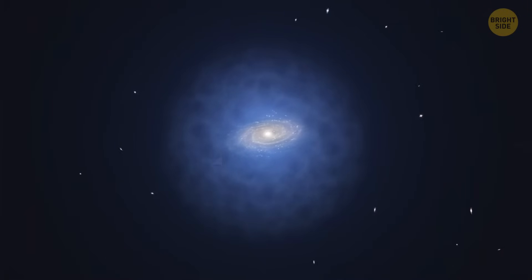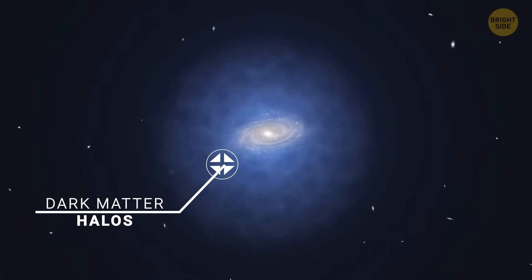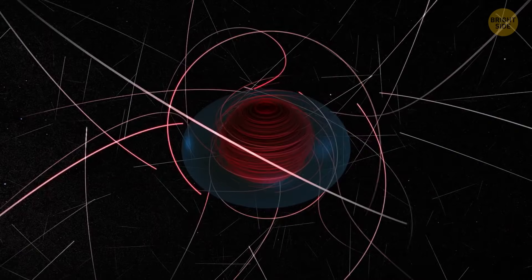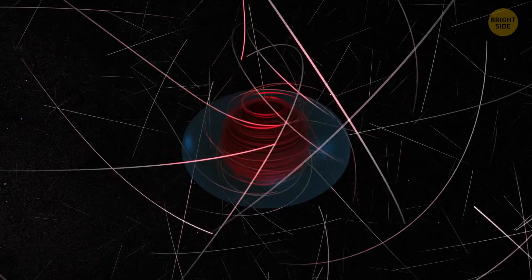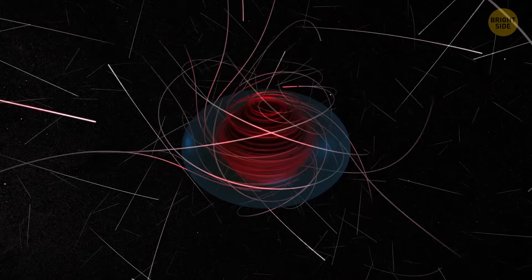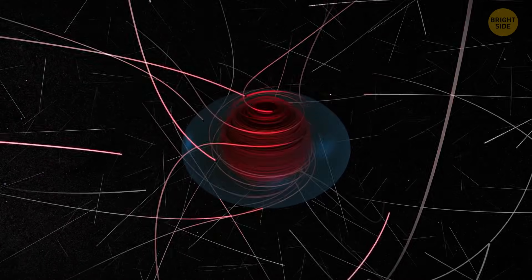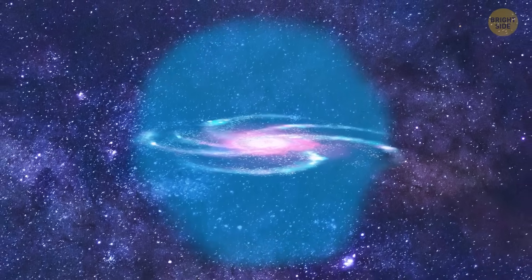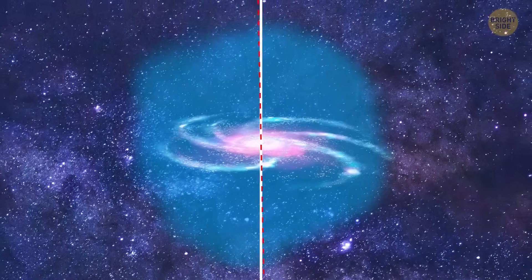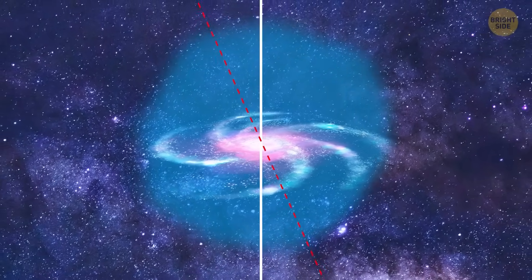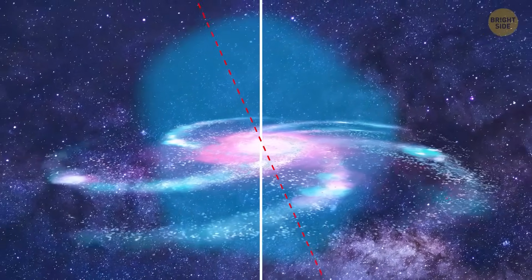Dark matter halos are invisible yet massive structures surrounding most galaxies, including the Milky Way. These halos contain most of a galaxy's mass and have a strong gravitational influence on the galaxy's structure. If a dark matter halo is tilted relative to a galaxy's plane, its gravitational effects could distort the galaxy over time.